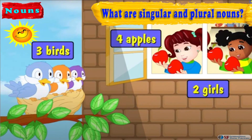Just a minute, Mom. Things have changed. Now I can see two girls. Each of them have two apples in their hands. And the mother bird is not alone. She has two chicks with her in the nest. So, in total, I am able to see two girls, four apples, and three birds.